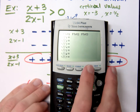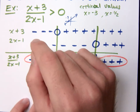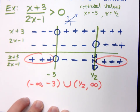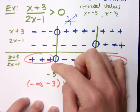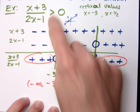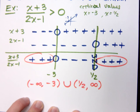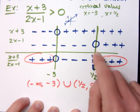The only reason to use a bracket is if there's an equal-to sign. If this were greater than or equal to zero, we would bracket negative 3 because the expression equals zero there. However, the point at one half is undefined, so you can never include it — it must always be a parenthesis, even with an equal-to sign.